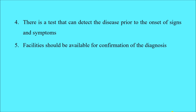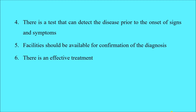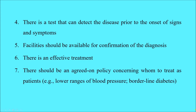Facilities should be available for confirmation of the disease. Sometimes a screening test indicates that a person may be suffering from a disease but cannot confirm it definitively, so we need a confirmatory test — facilities that can confirm the diagnosis must also be in place. Additionally, there must be an effective treatment available. What is the point of screening or diagnosing a disease if we cannot do anything about it? Effective treatment should exist that will either cure the disease or minimize the suffering of the person.